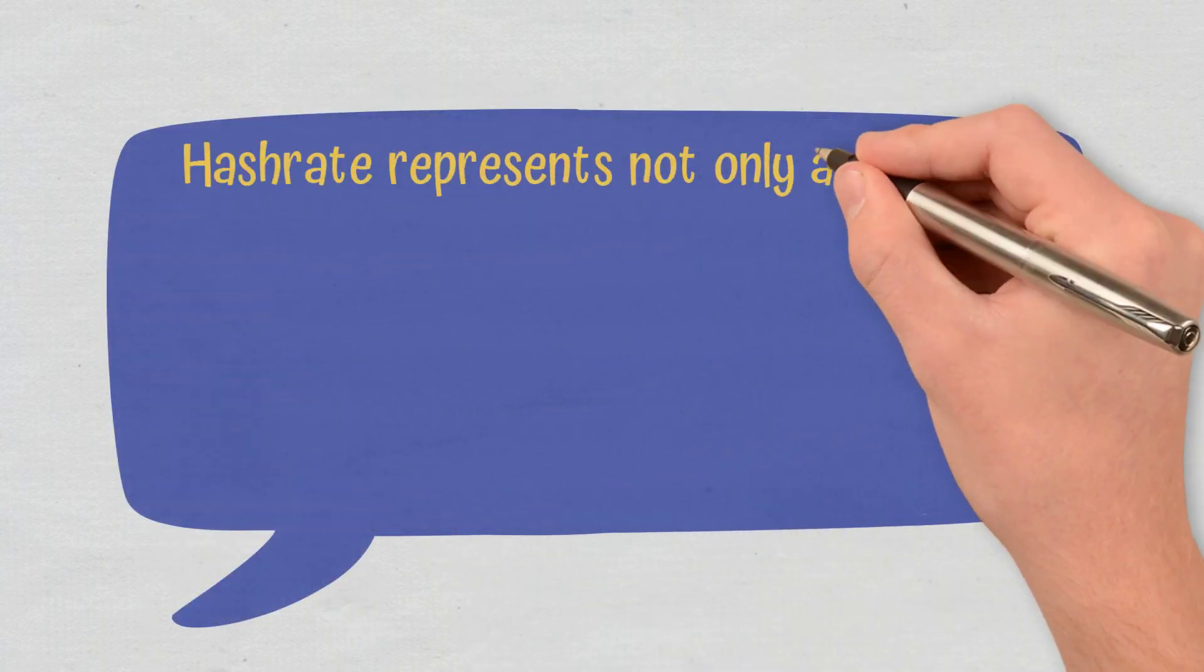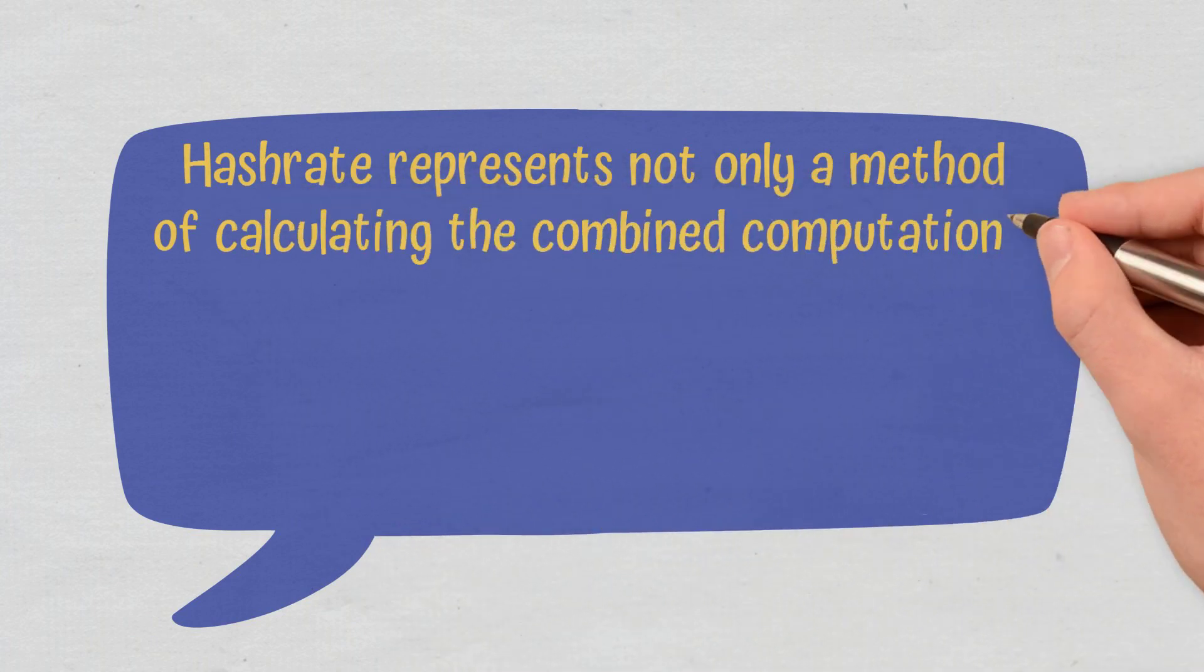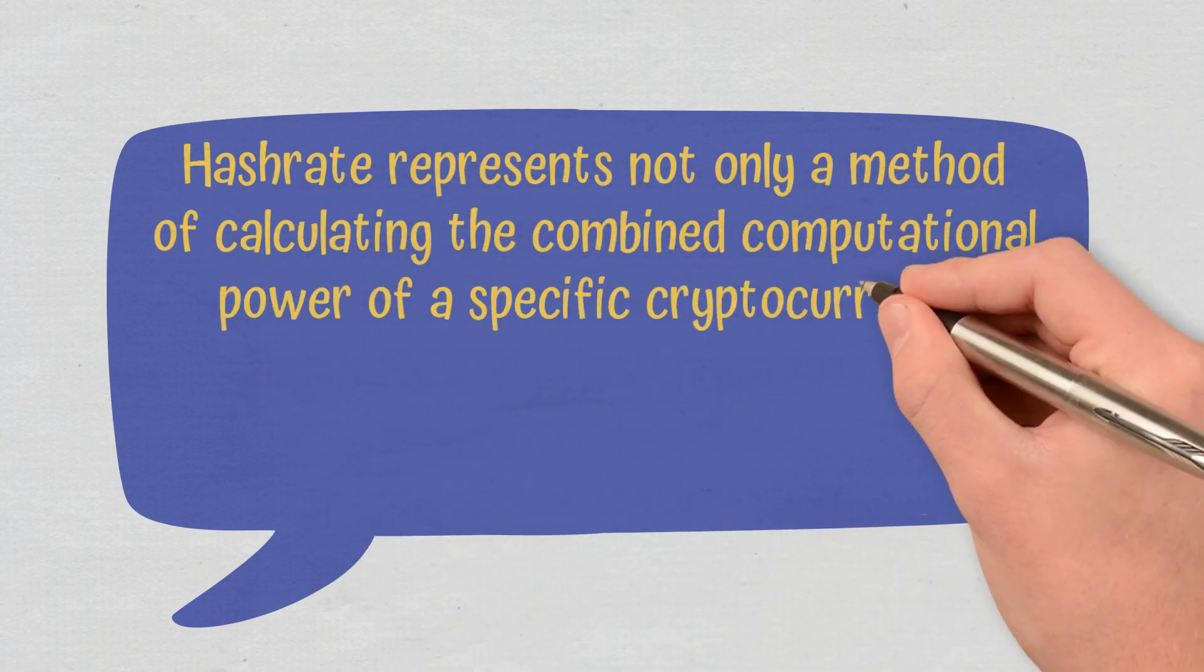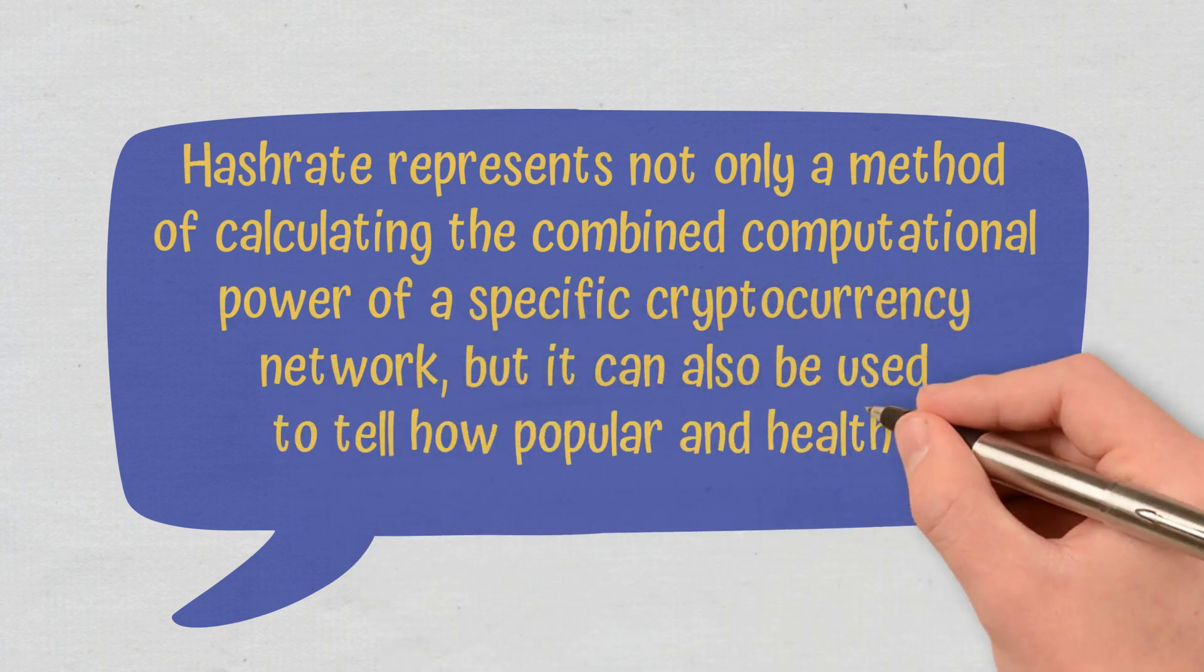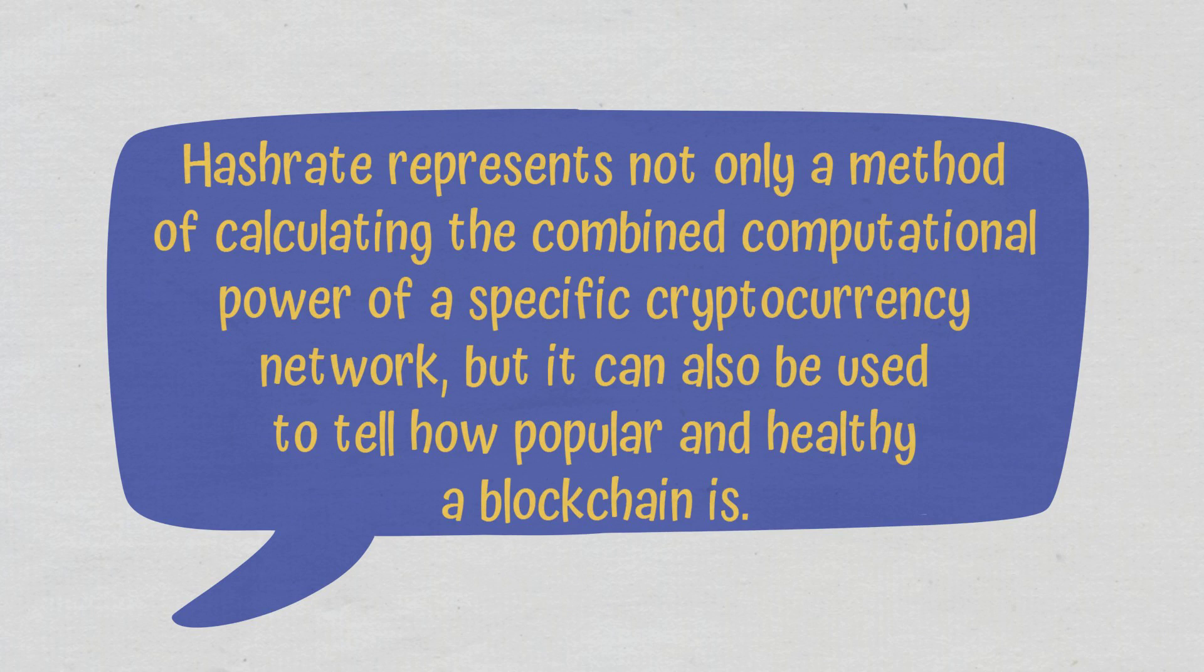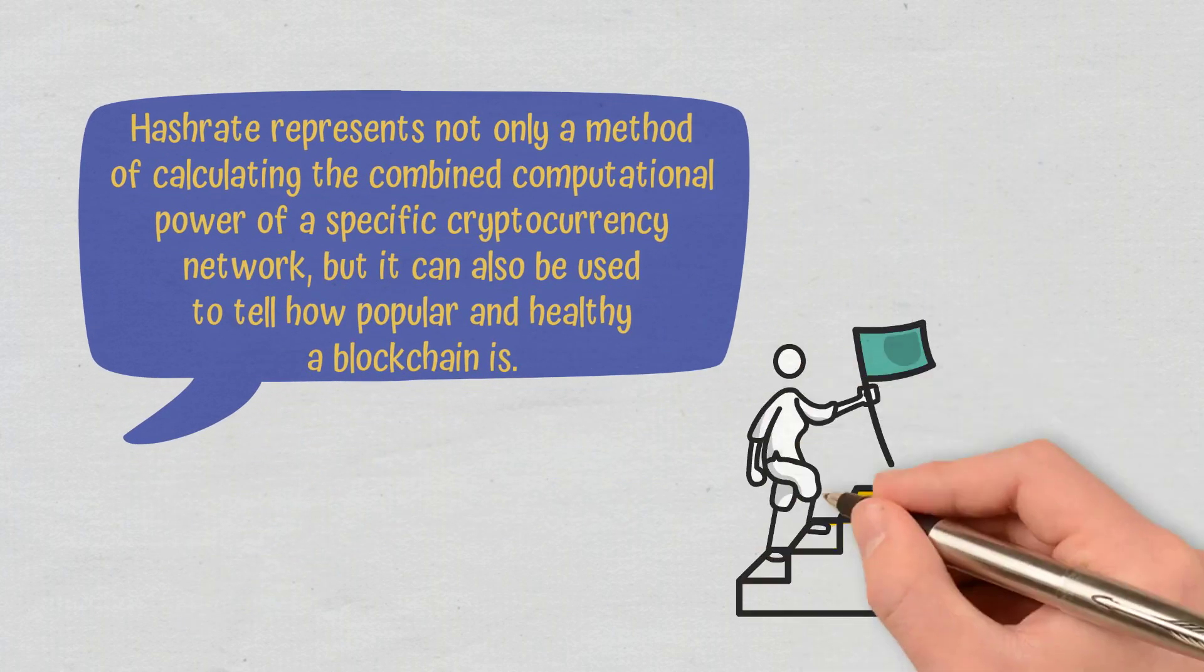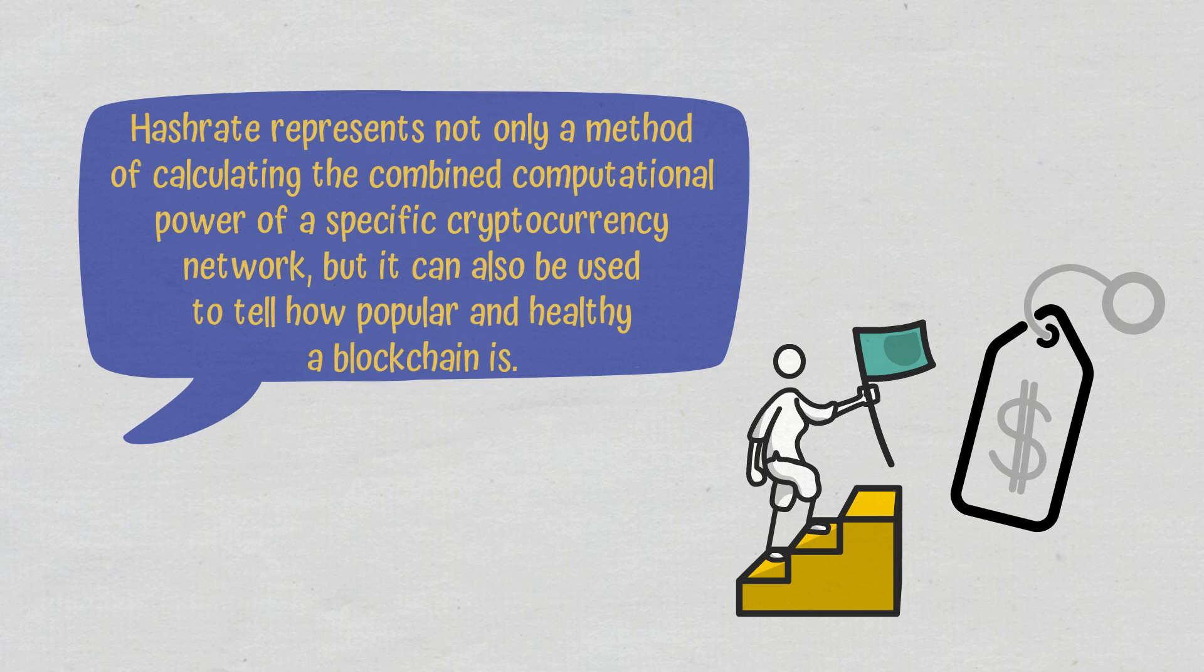Conclusions. Hashrate represents not only a method of calculating the combined computational power of a specific cryptocurrency network, but it can also be used to tell how popular and healthy a blockchain is. A high Hashrate represents success and is associated with a high value for the cryptocurrency it represents.